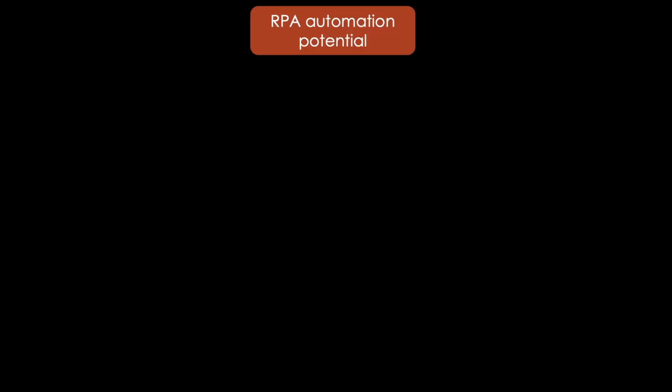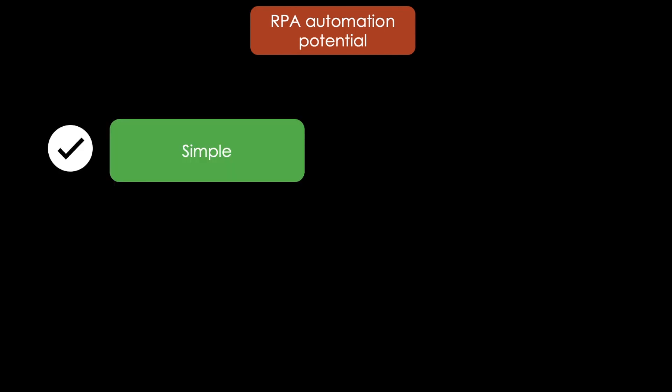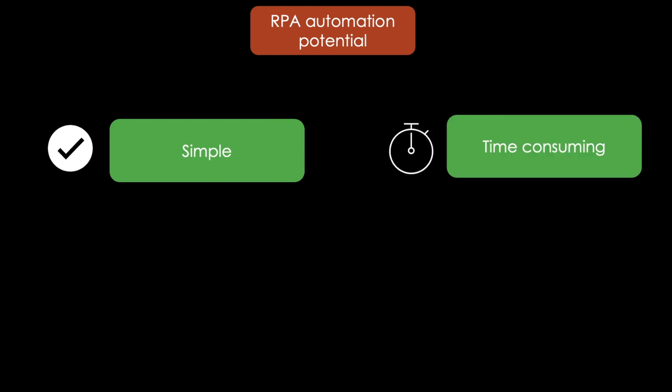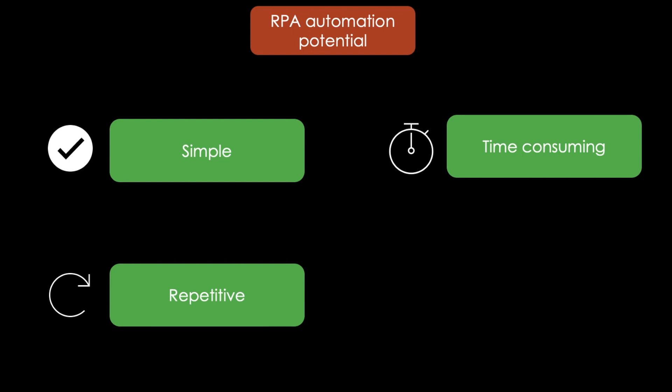Let's summarize what business processes can be automated by robotic process automation. Basically, RPA can be used for almost all business processes fulfilling the following characteristics. First of all, the business processes should be simple, meaning that the complexity should not be too high. Furthermore, RPA is really suited for time-consuming processes. The processes should be repetitive, meaning that they are executed on a regular basis.